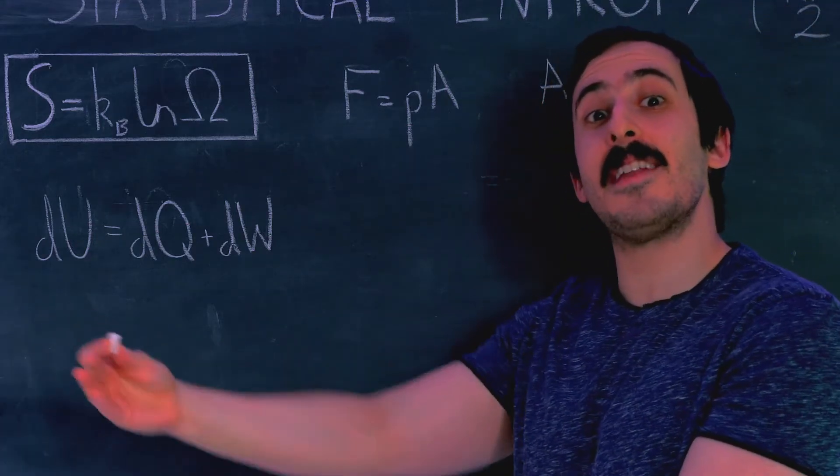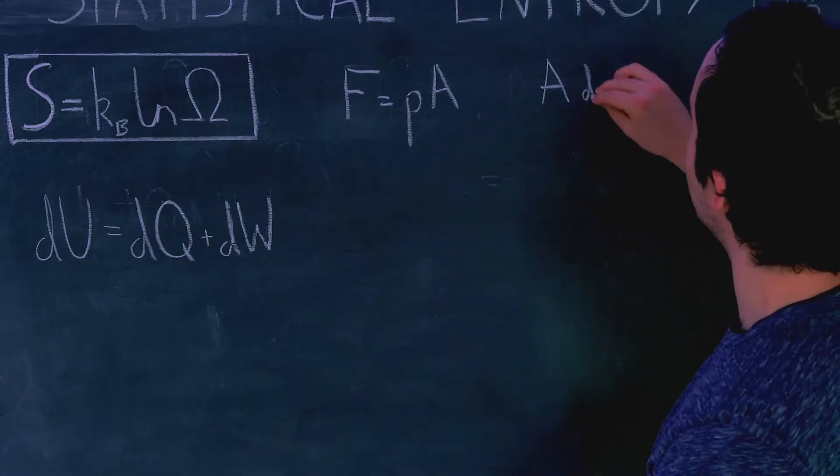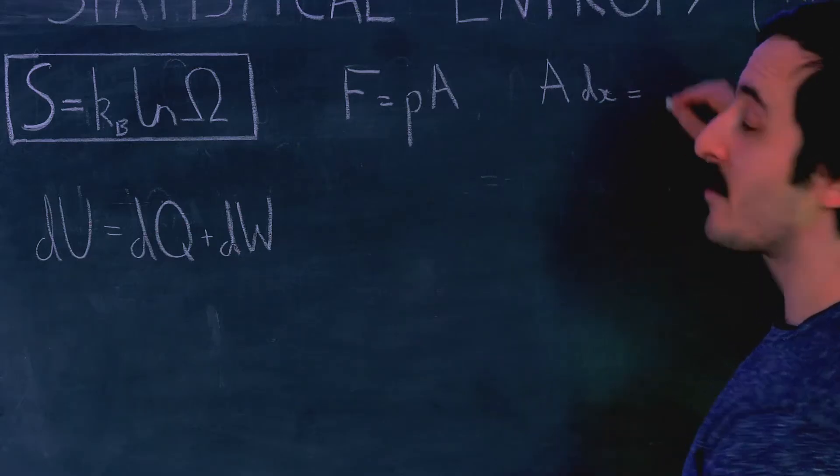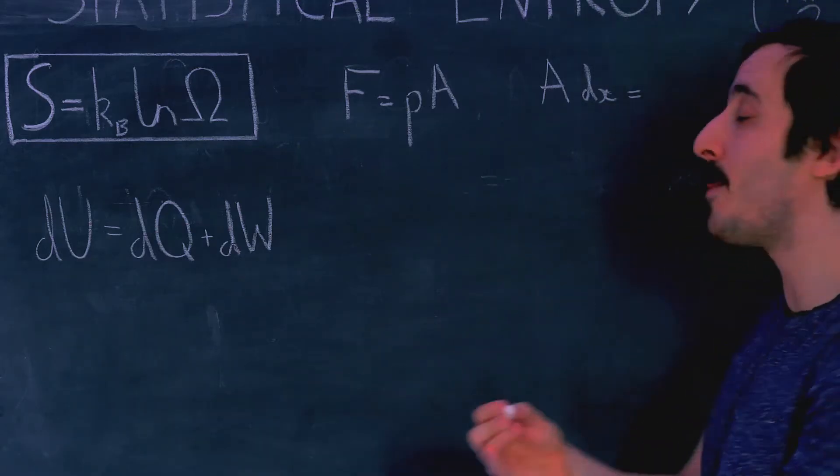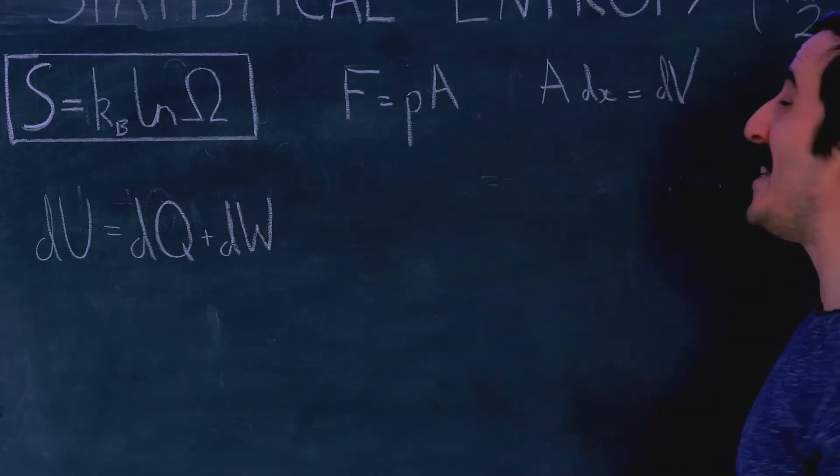So F equals PA and if we have some area and we extend that area in a third dimension by a very small amount which I write as dx then A dx is equal to some small volume right we have an area we extend it a little bit so now we have some small volume which I write as dV.